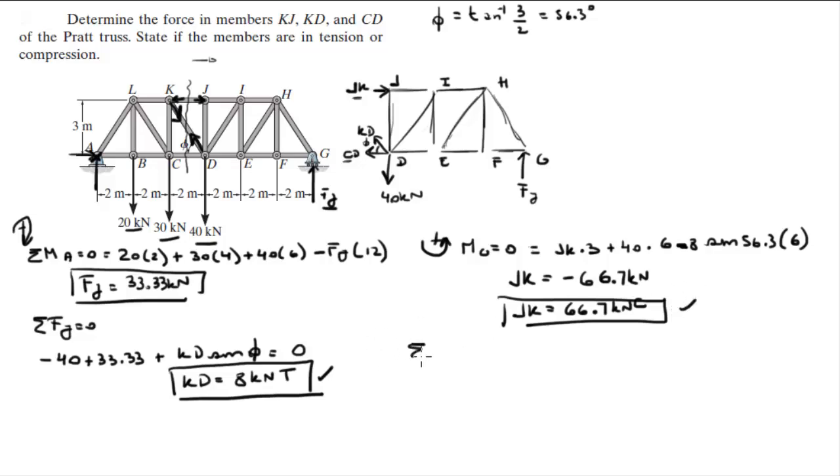And now you can do the sum of the forces in the x are equal to 0 because you know Jk is going to the right. Minus Cd minus 8 cosine of 56.3 which is Kd's x component. And all these are equal to 0. So when you solve for Cd, you get it is equal to 62.3 kilonewtons.